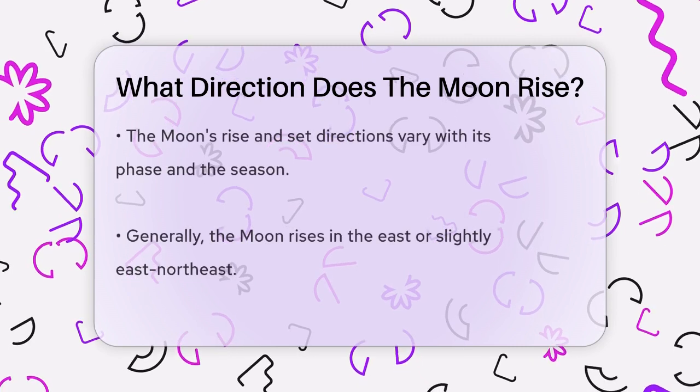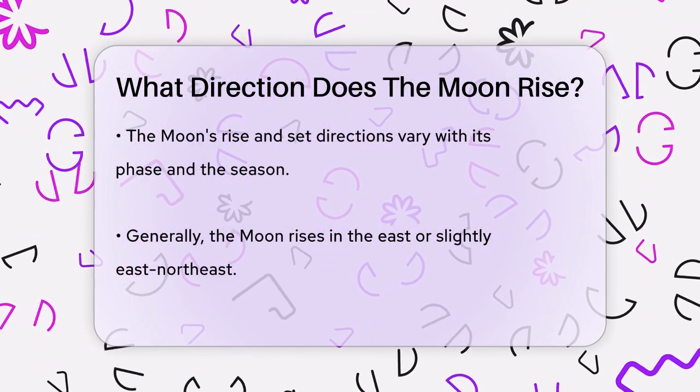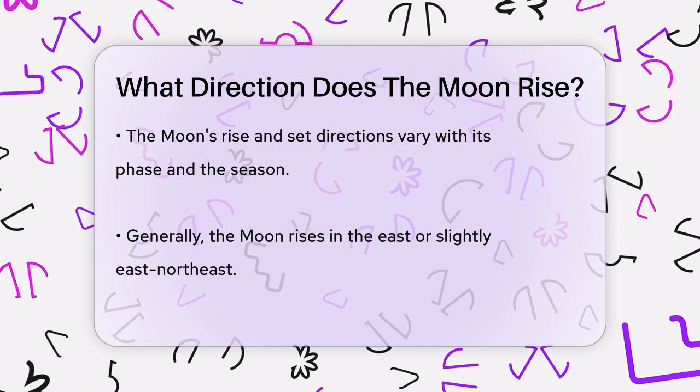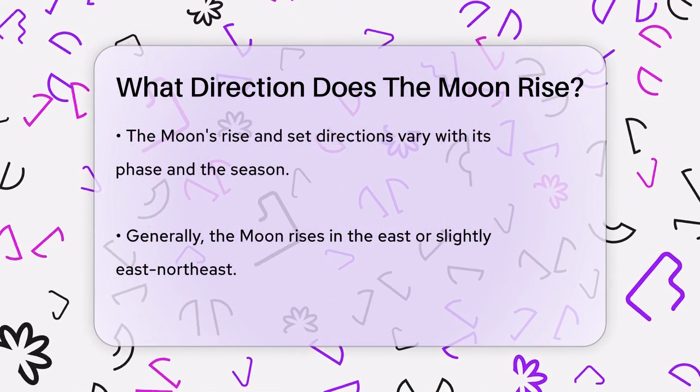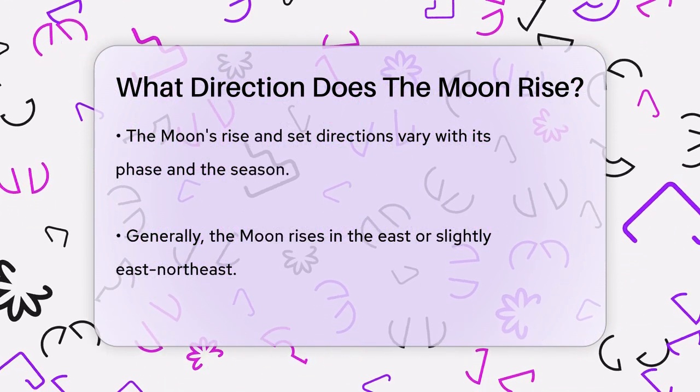But here's the interesting part. The Moon's rise and set directions can vary depending on its phase and the time of year. More often than not, the Moon rises in the east or slightly east-northeast and sets in the west or west-southwest.